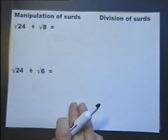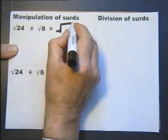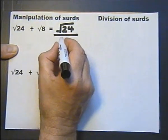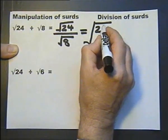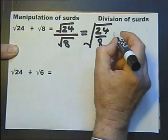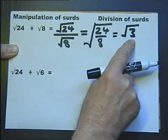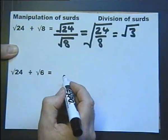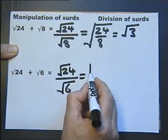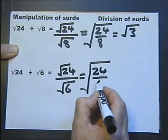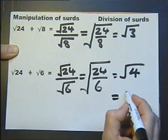Now let's manipulate surds by division. We can always write something divided by something as a fraction. For example, √24 divided by √8 can be written as √(24/8), and since 24 ÷ 8 = 3, this simplifies to √3. Another example: √24 divided by √6 can be written as √(24/6) = √4 = 2, since the square root of 4 is 2.